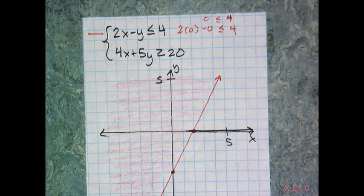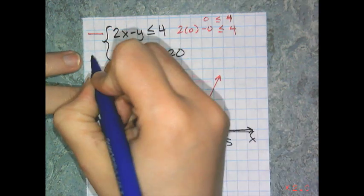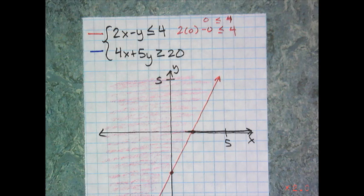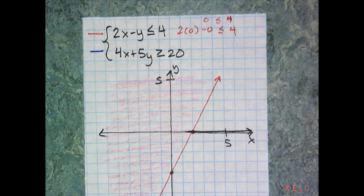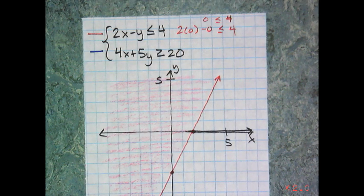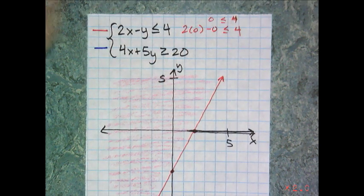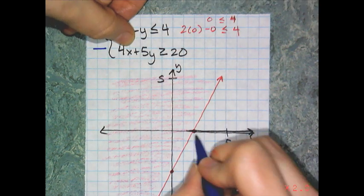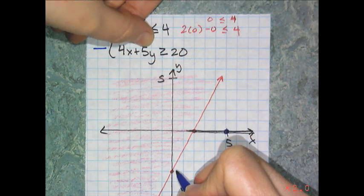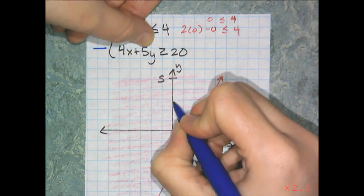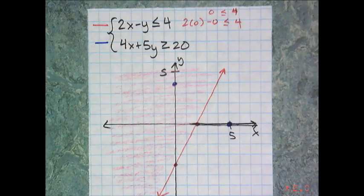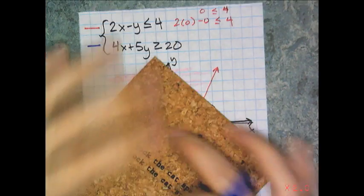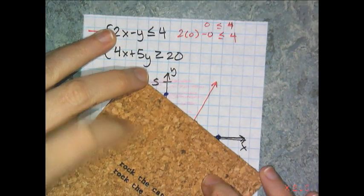Now my second line, I'm going to be graphing in blue. It is also inclusive, so it's a solid line. I'm going to do the same thing. I'm going to graph by using the x and y intercepts. This one has an x intercept at 5, and a y intercept at 4. And it's also a solid line, so I'm going to connect those two dots with the solid line.